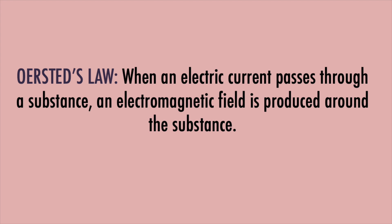Orsted's Law states that when electric current passes through a substance a magnetic field is produced around the substance. Now since the magnetic field is being created by electric current rather than by a permanent magnet, this type of field is typically called an electromagnetic field. But let's look at an example.